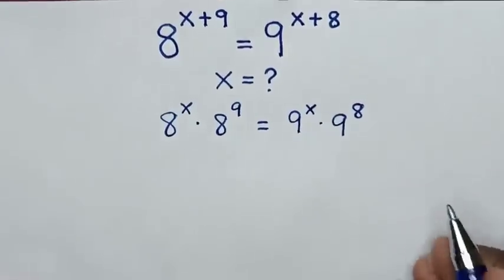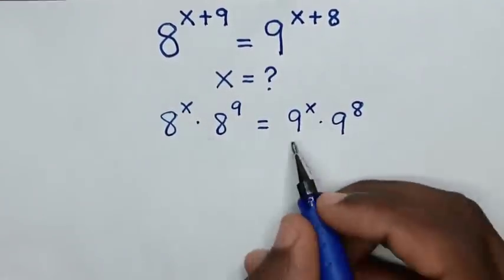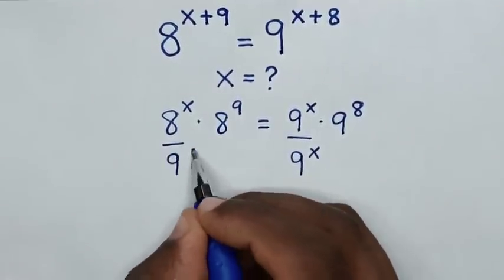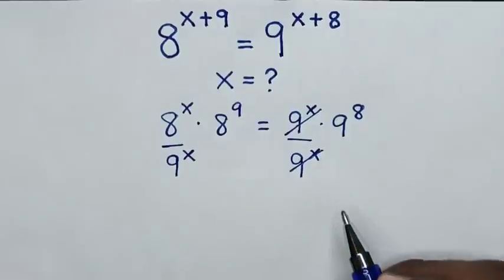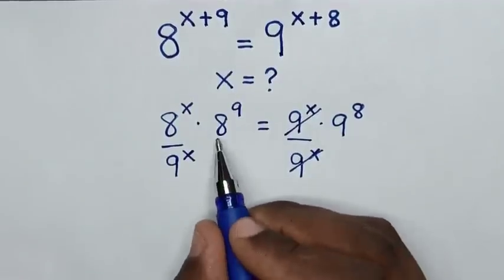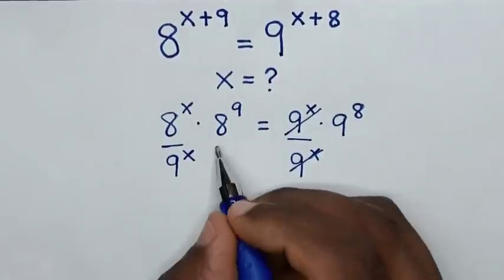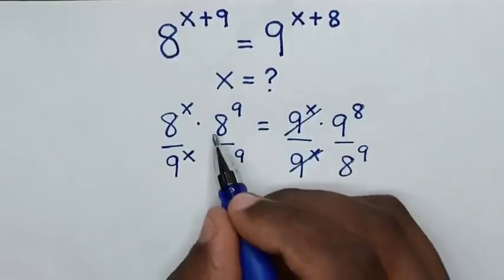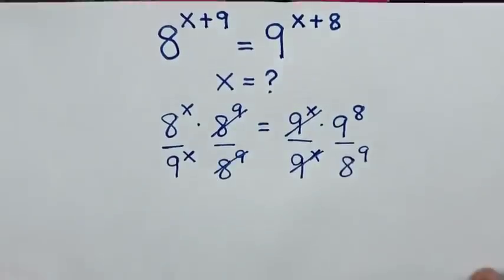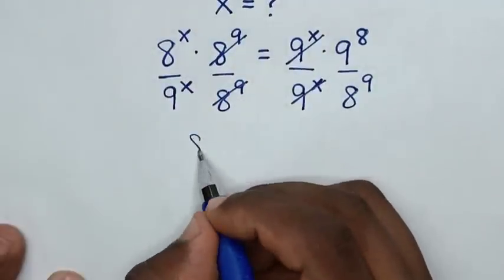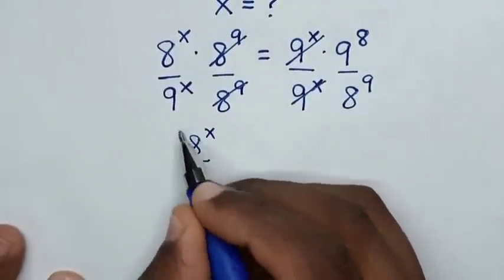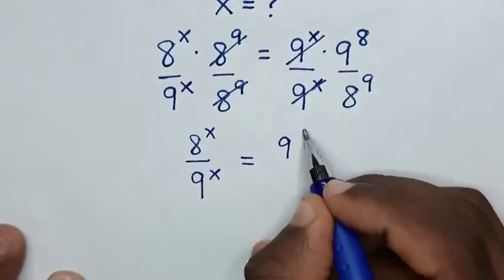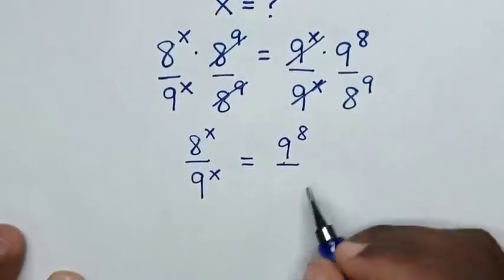Then, in the next step, we make the exponent with the same power of x on one side. So we divide by 9 power of x on both sides. This and this will cancel. Then we take 8 power of 9 to the right side, so we divide by 8 power of 9 on both sides. This and this will cancel. So our equation will be 8 power of x over 9 power of x is equal to 9 power of 8 over 8 power of 9.